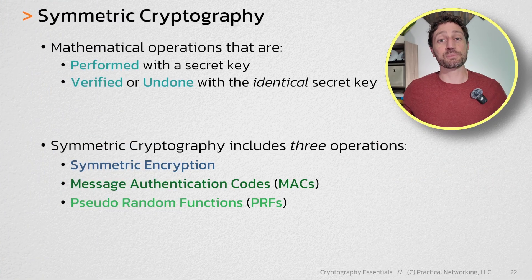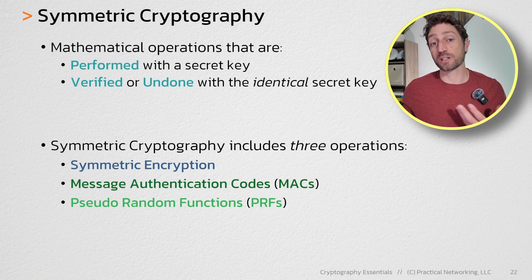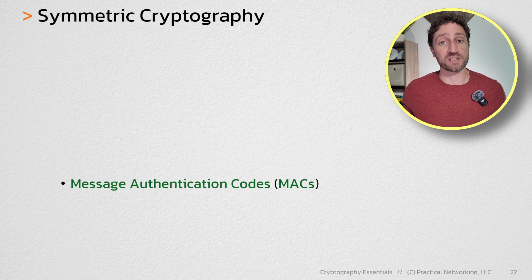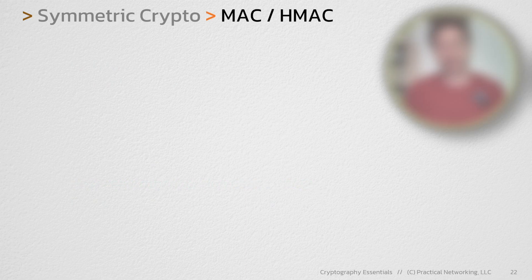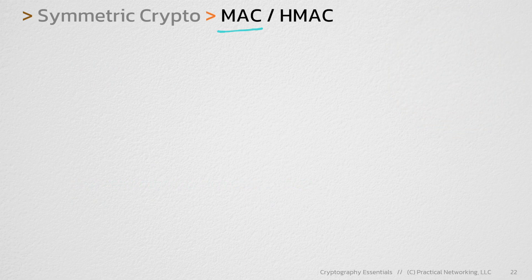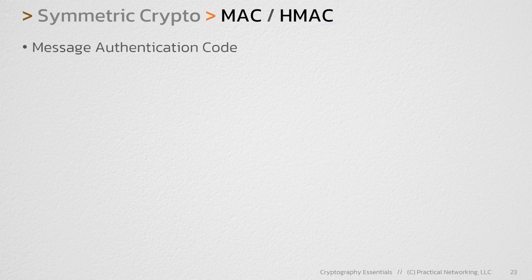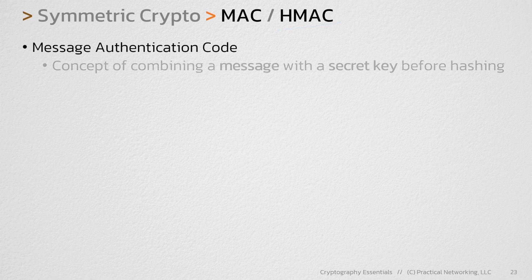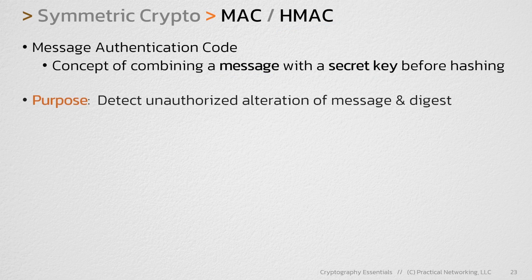Hey folks, welcome to another video in my cryptography series. In this video, we're going to continue to explore symmetric cryptography and talk about message authentication codes. And in the process, we'll also get to discuss HMACs. A MAC is the concept of combining a message with a secret key before hashing. The purpose is to detect alterations of the message or the digest.